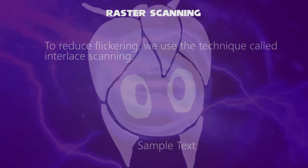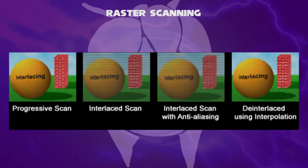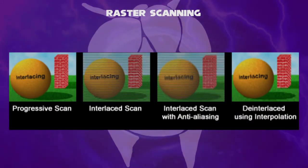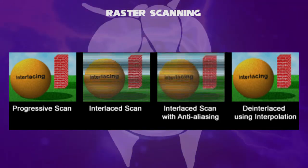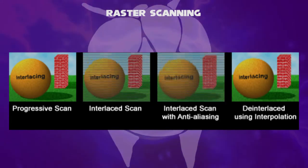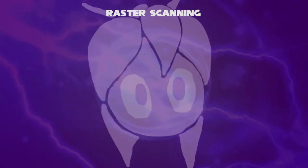Interlaced scanning doubles the perceived frame rate of a video display without consuming extra bandwidth. One for the odd and the other even lines combine together to form each frame.